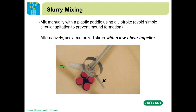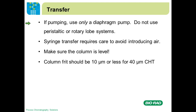We can recommend various impeller manufacturers and model numbers — please feel free to call us. If you are transferring slurry from a slurry tank into a column, only use a diaphragm pump. Do not use peristaltic or rotary lobe systems, because they will shear the CHT particles during transfer. A peristaltic pump will leave sheared particles in the column; a rotary lobe system will also score the inside of the pump. You can also transfer via syringe — a fairly popular method where you bring the column top adapter down, seal it, and pull it up to transfer from a slurry tank.